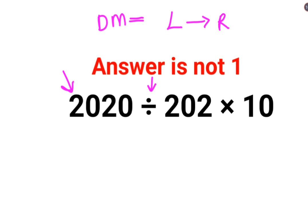So this is basically 2020 divided by 202. That gets you 10 multiplied by 10. So the answer for this question is supposed to be 100.